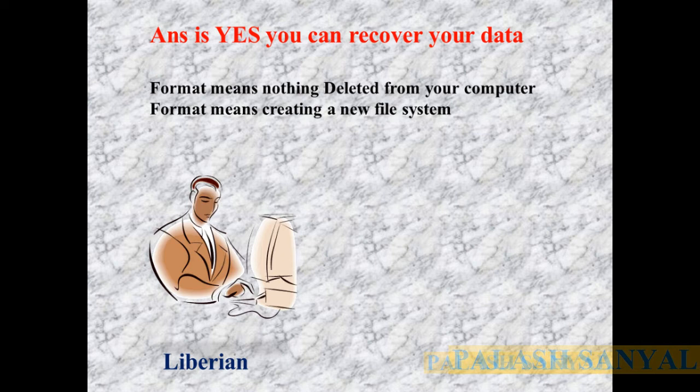Your computer formatting means creating a new file system — a record of where files are logically stored, along with information about your hard disk's sectors and clusters. This information is what gets replaced. Your actual file data is not deleted; only the file system record is removed. So if you use any data recovery software, you can recover your data.